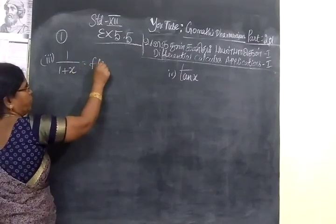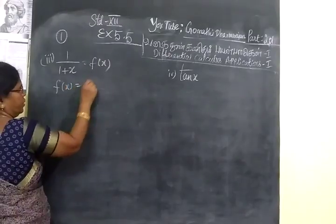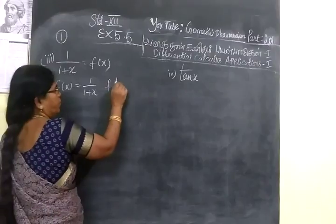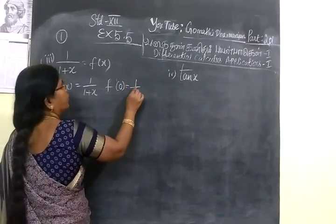So now I usually have to go f of x. f of x, see, it is 1 by 1 plus x. So immediately you are finding f of 0. f of 0 will be equal to 1.